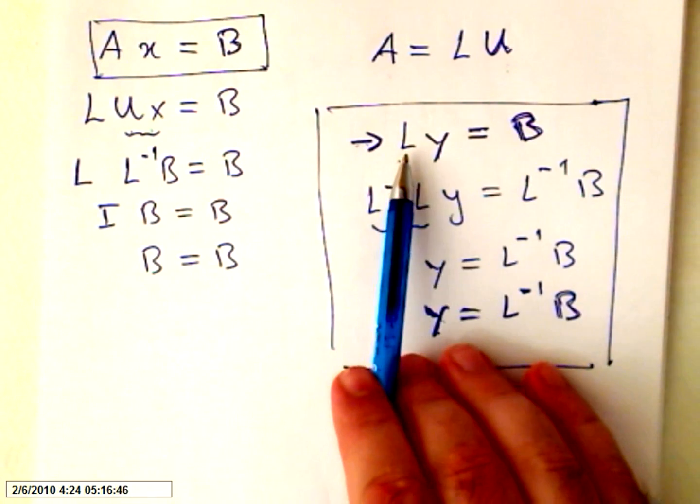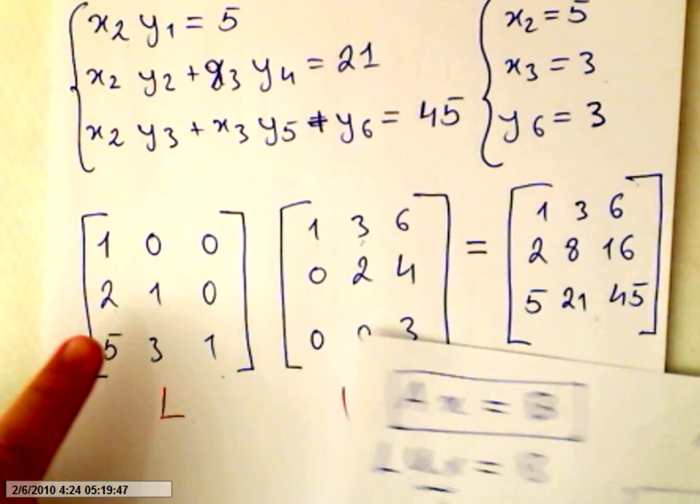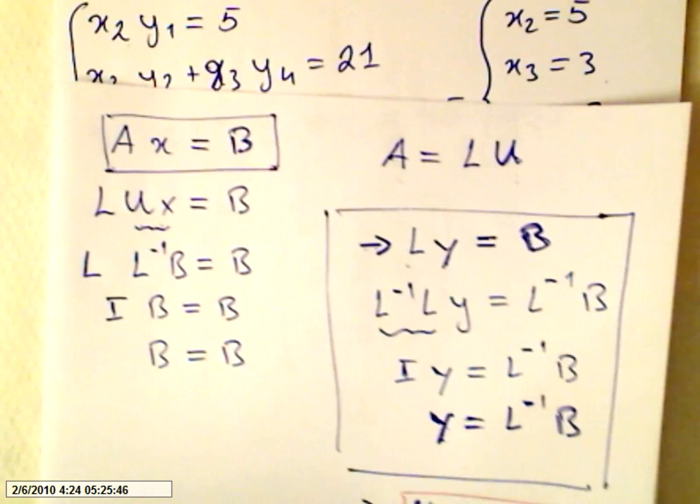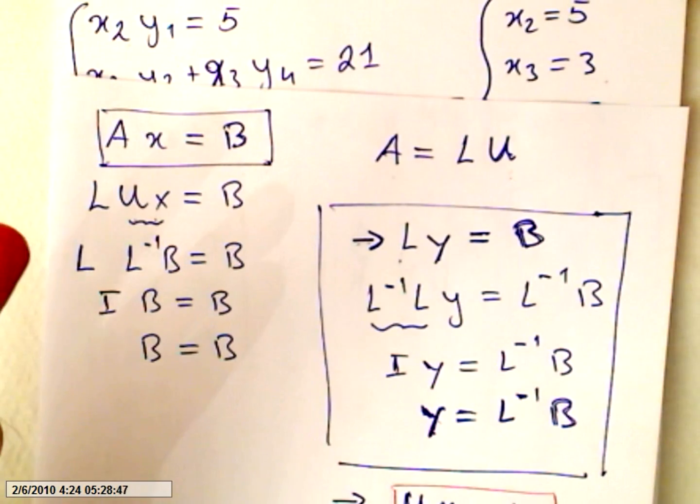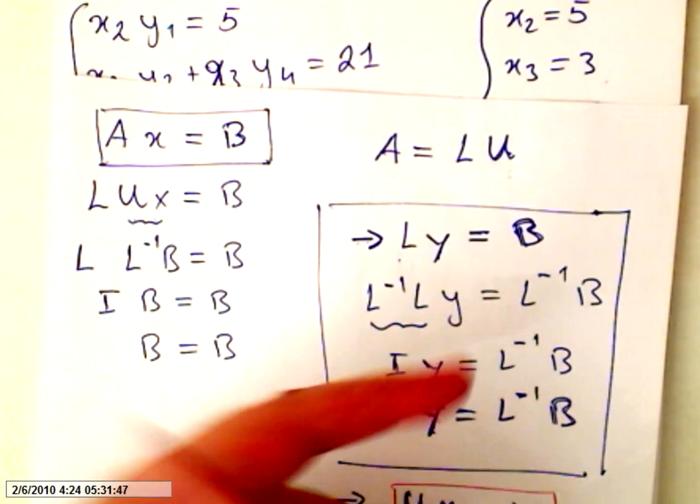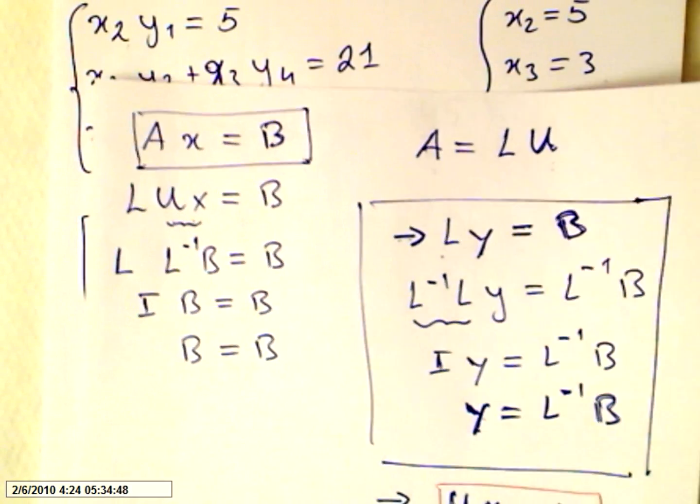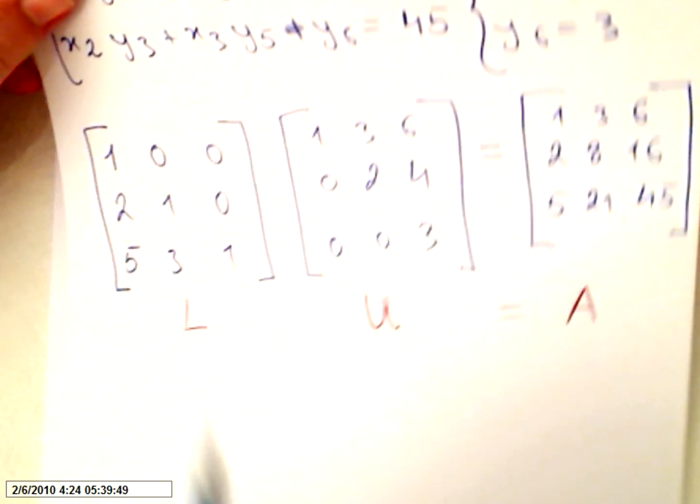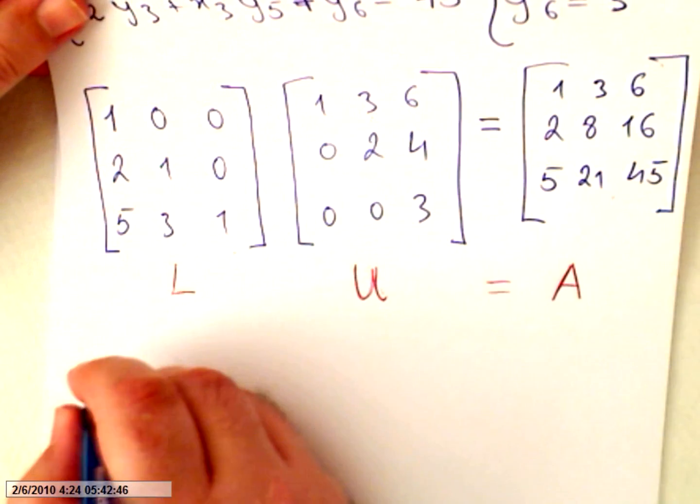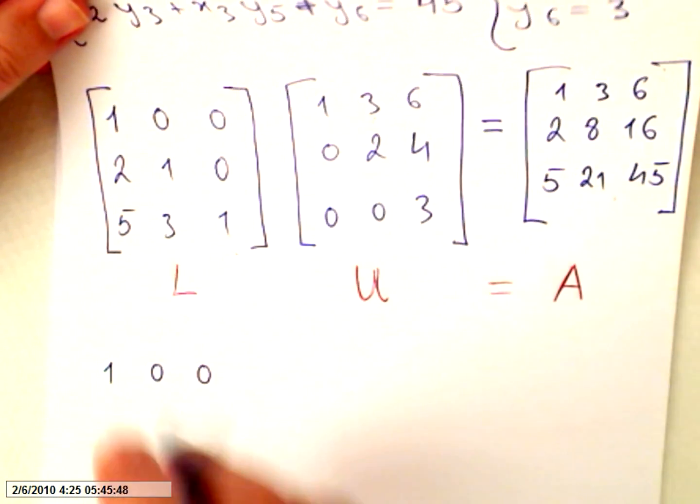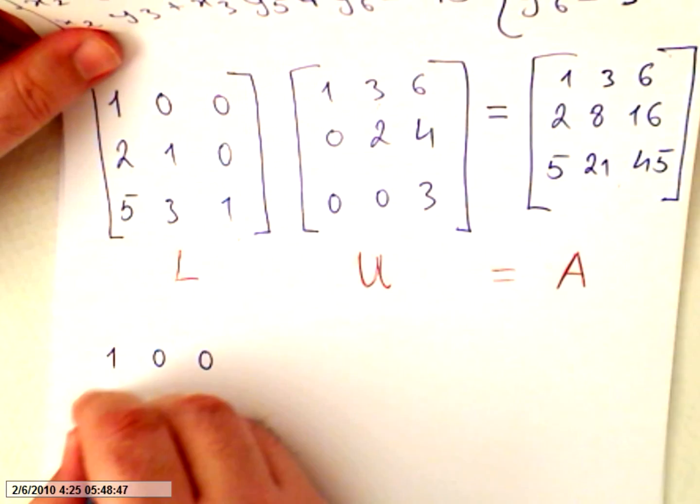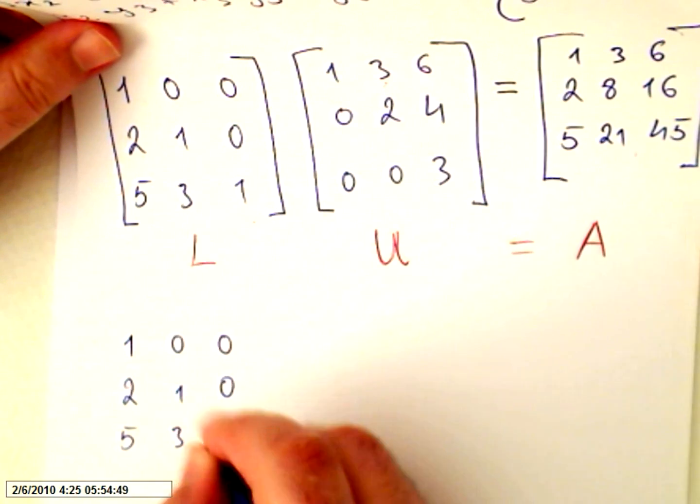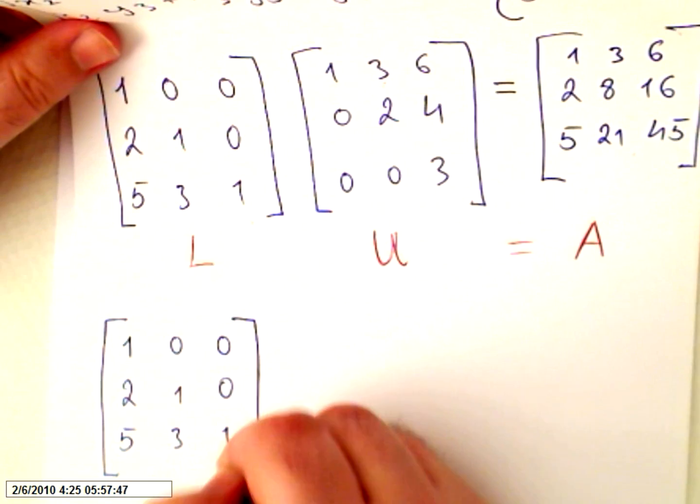Second step, now we are going to do L. So we are going to use matrix L times new variables y, and it equals b, meaning the independent values. So the lower will be this matrix: 1, 0, 0, 2, 1, 0, and 5, 3, 1. This is the lower matrix.